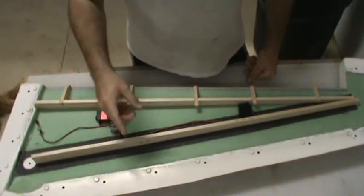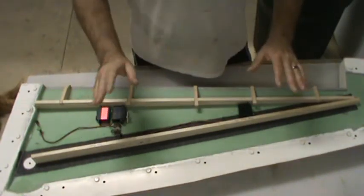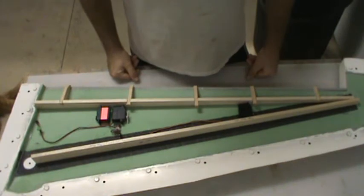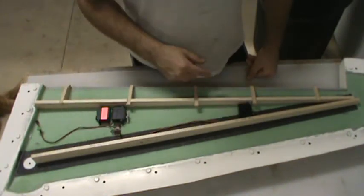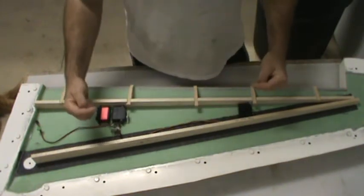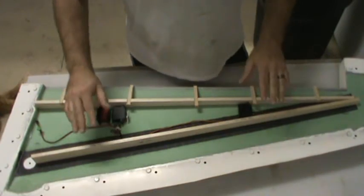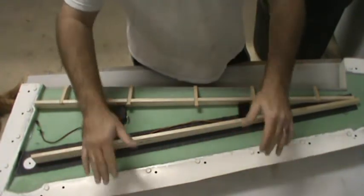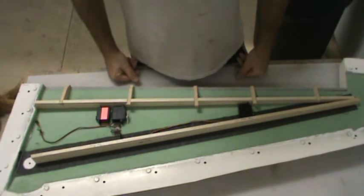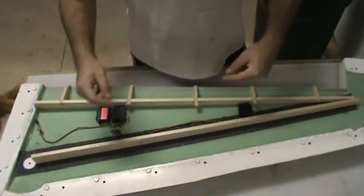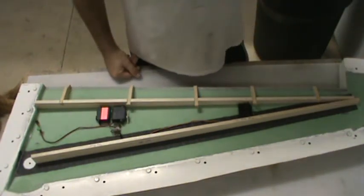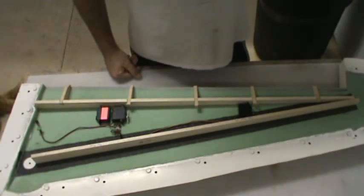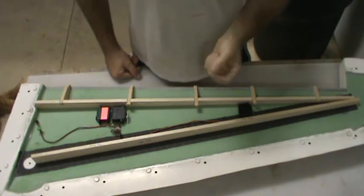What would happen is you would have one servo operating that torque tube, and then as it pushes the slats forward, it would guarantee the slat goes out evenly every time. You wouldn't have to worry about getting a matchbox in there, so I really like that idea.